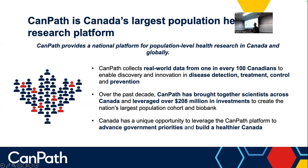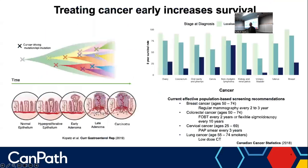CANPATH is Canada's answer — a national population platform. We've recruited about one in a hundred Canadians who have consented to be part of this activity. Our mandate is to understand who develops diseases, why they develop them, and also who isn't developing them — the healthy aging side. Who are those 80 or 90-year-olds not developing chronic disease? That can only be captured in this kind of cohort. There are smaller studies of centenarians, but this is the scale we're thinking about.